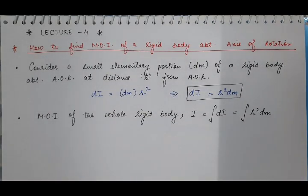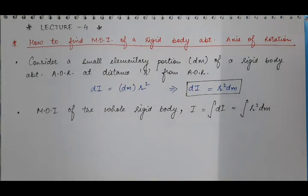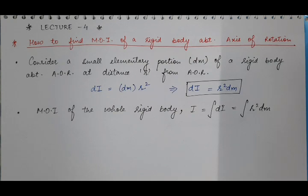There are further cases depending on the type of rigid body — whether it is a three-dimensional body or a plane lamina. A plane lamina is a thin flat layer of a solid; it is technically three-dimensional but has a very small thickness, and the whole mass of the body is supposed to be concentrated in that single plane.